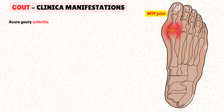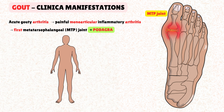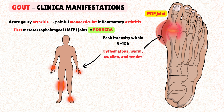Typically, gout presents as acute gouty arthritis — a sudden and painful monoarticular inflammatory arthritis. The most common site is the first metatarsophalangeal joint, a condition also known as podagra. However, gout can also affect other joints including the ankle, knee, wrist, and small joints of the hand. The pain is severe and reaches its peak intensity within 8 to 12 hours. Clinically, the affected joint will be erythematous, warm, swollen, and tender. Left untreated, an acute attack can last for days to weeks before spontaneously resolving.